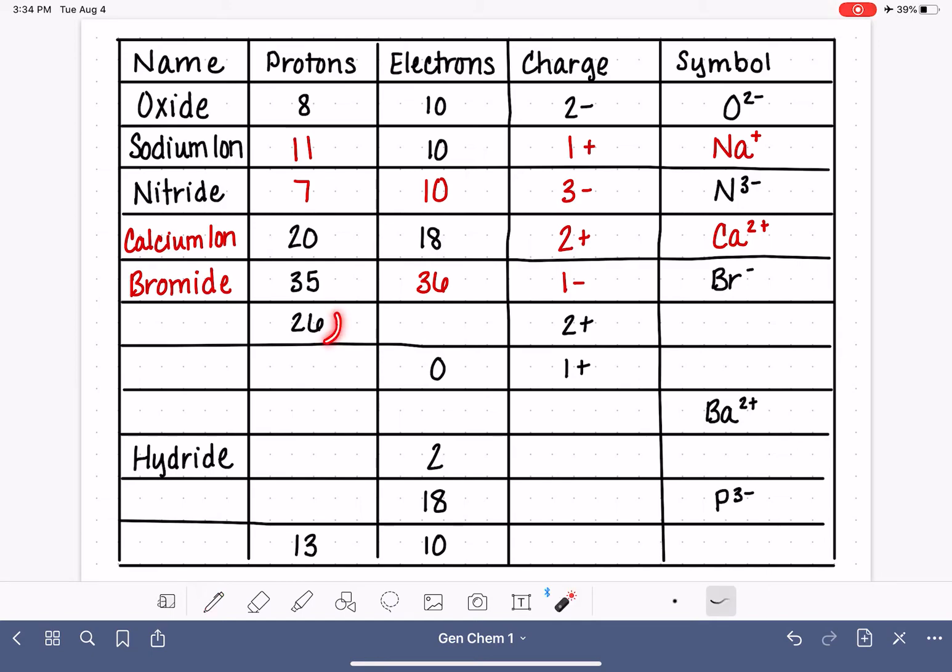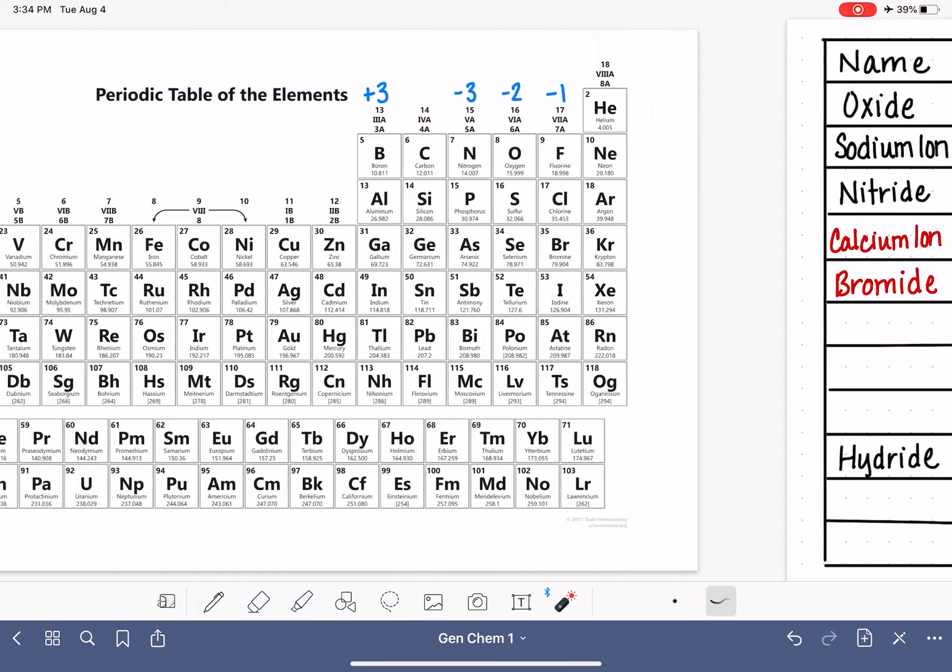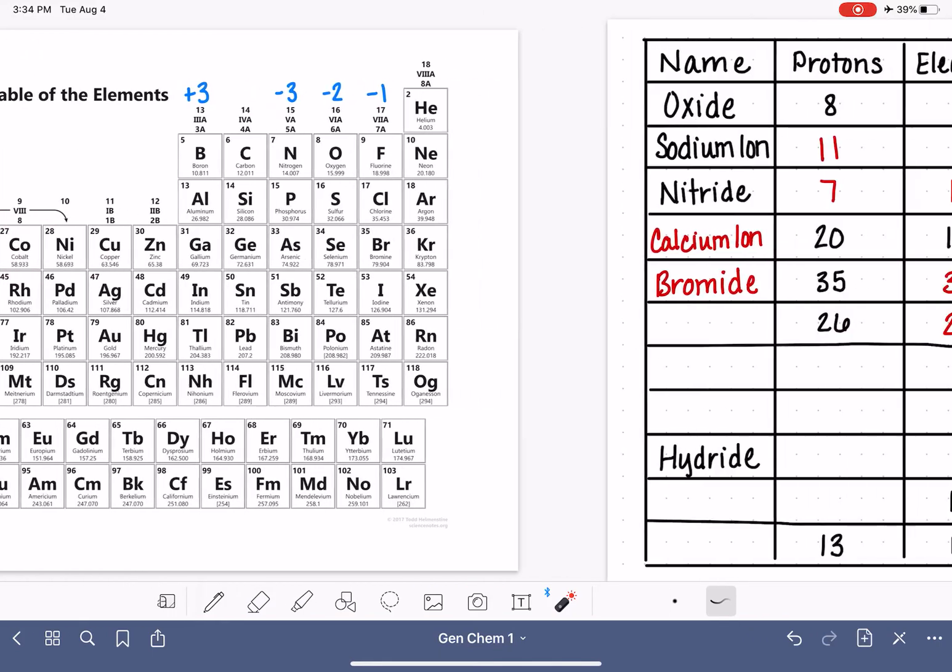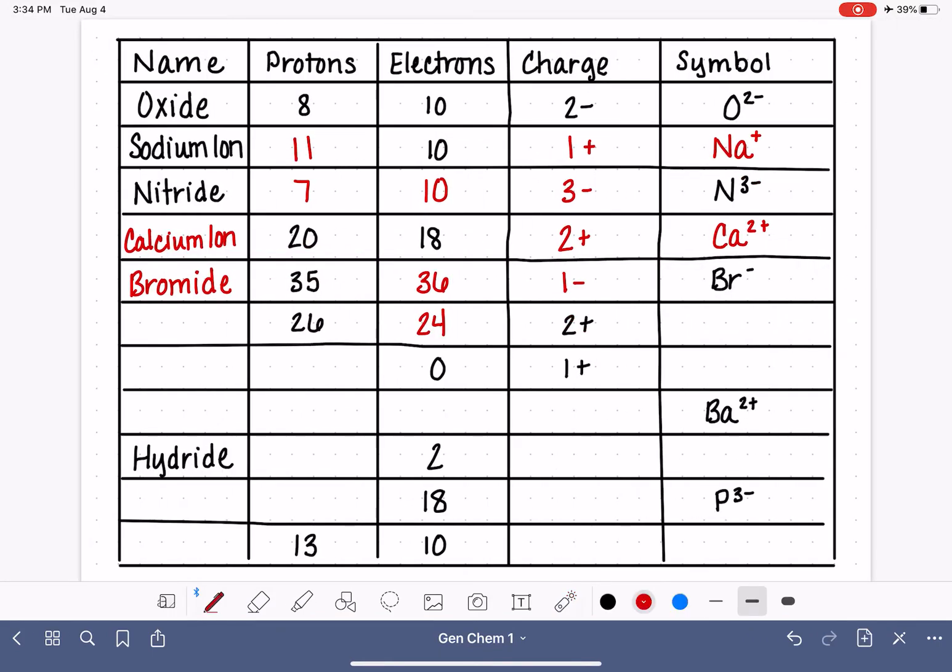Here's our next example. 26 protons with a 2 plus charge. The 2 plus charge tells us that we have extra protons. So that means we must have 24 electrons. We have 2 more protons than electrons. What's the symbol? What's the name? We need to find 26 on the periodic table. 26 is iron. Symbol is Fe.